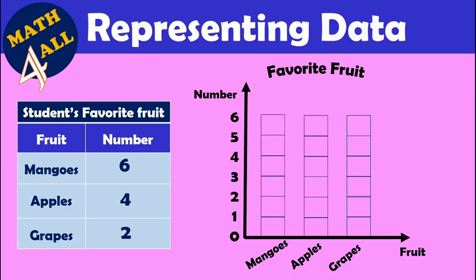Complete the graph using the data in this table. Look at this table: 'Students' Favorite Fruit.' The categories are the fruits — mangoes, apples, and grapes. First, 60 students chose mangoes, so you will color the bar to reach the number 6.